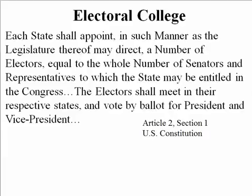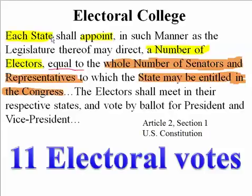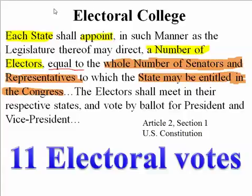Each state can appoint a number of electors equal to the whole number of its senators and representatives that state has in the United States Congress. Each state appoints a number of electors, and this group of people is what we call the Electoral College. When every state sends in its number of electors, they have an Electoral College meeting to choose who the president will be.